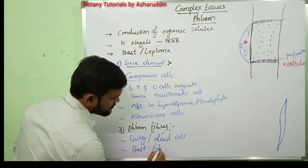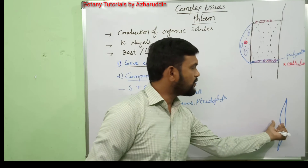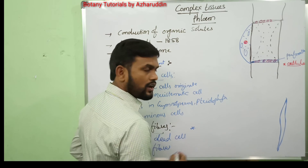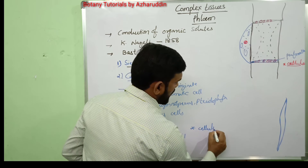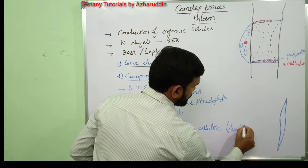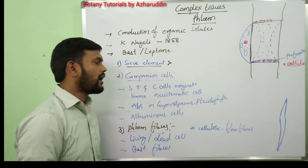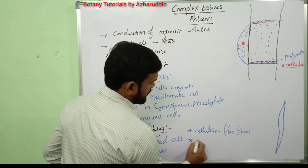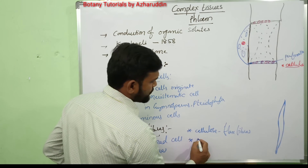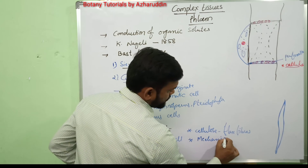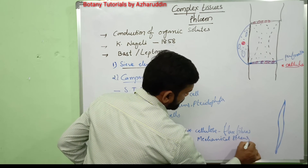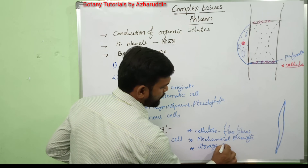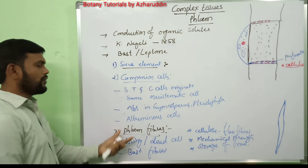In some species, the cell wall of the fibers is made up of cellulose, and such fibers are called flax fibers, which have high commercial value. Phloem fibers are useful in giving mechanical strength to the plant. If the fibers are living cells, they also help in storage of food.